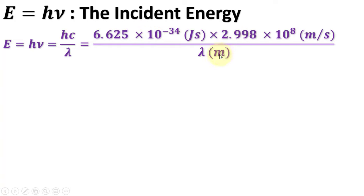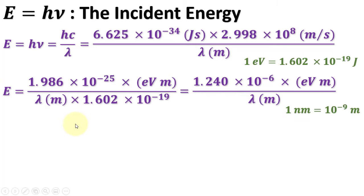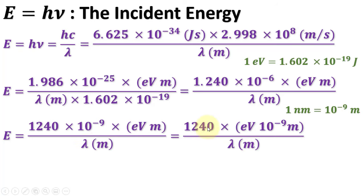As we will find the band gap energy in electron volts, we will convert Joules into electron volts by this relation, which simplifies as this. I can write this like this, and by putting lambda in nanometers instead of meters, we can have its simplification as this, since our experimental data lambda is in nanometers.